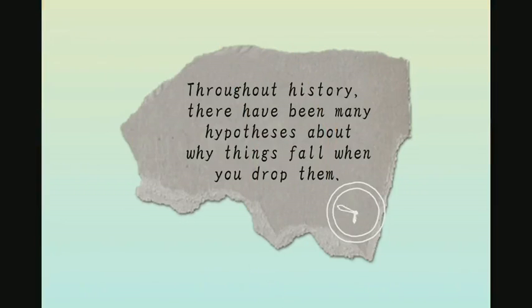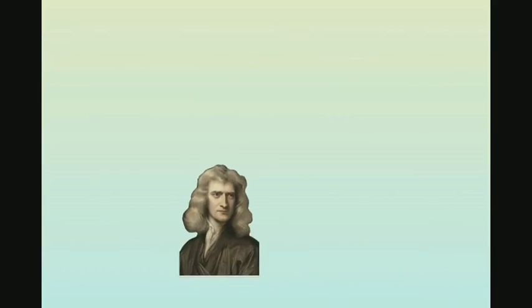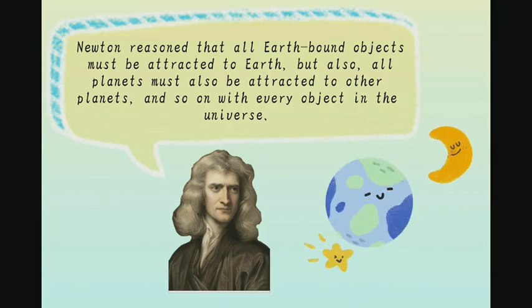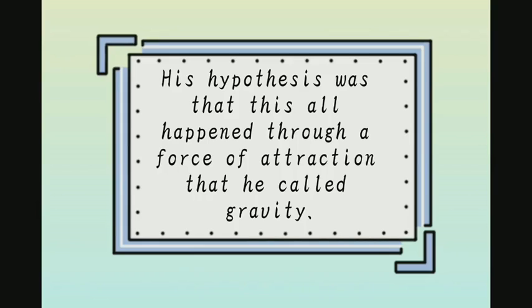Throughout history there have been many hypotheses about why things fall when you drop them. Aristotle believed it was because material objects had a tendency to fall towards the center of the universe, which the ancient Greeks believed was Earth. Newton, on the other hand, reasoned that all Earth-bound objects must be attracted to Earth, and that all planets must also be attracted to other planets — and so on with every object in the universe. His hypothesis was that this all happened through a force of attraction that he called gravity.